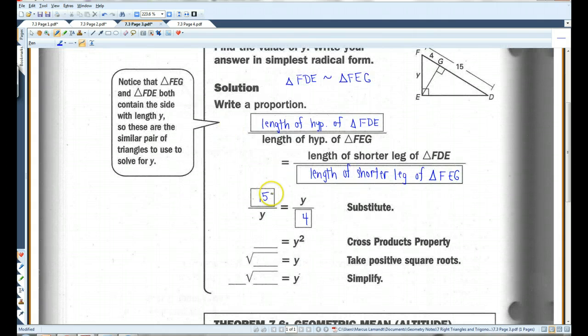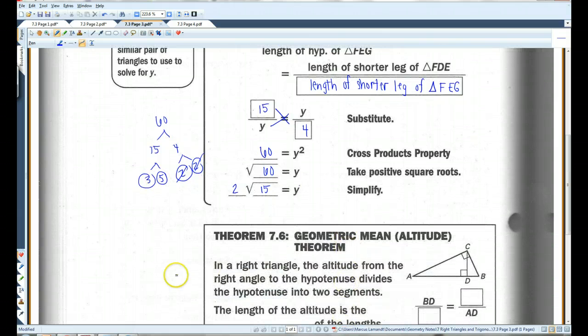Here I can cross-multiply. 15 times 4, that's 60. So 60 equals Y squared. You take the square root. Root 60 equals Y. 60, we already discussed, is 15 times 4. This is 3 times 5. 4 is 2 times 2. There are two 2s. 3 and 5 don't have a pair, so I'm just going to leave the 15 in the square root, because 3 times 5 is 15. And this is the simplest radical form. They don't want a decimal answer here.